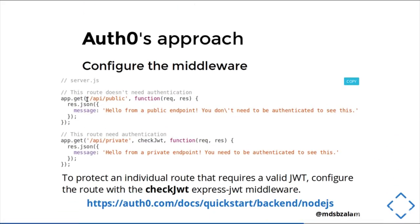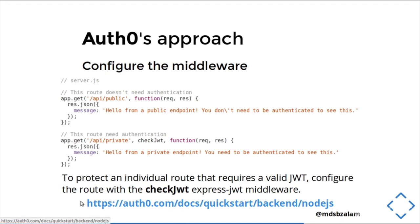Now let's look at these two routes — one is the public route and another one is the private route. The difference here is that we have used the checkjwt middleware. Whichever route we need to protect, we just need to pass the checkjwt middleware. It protects an individual route that requires a valid JWT. All these details can be found at this link.